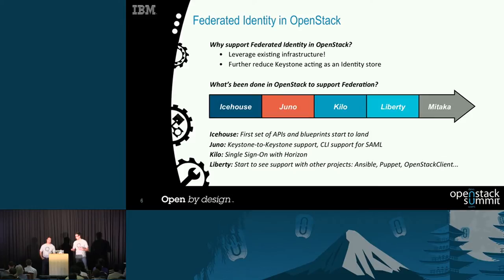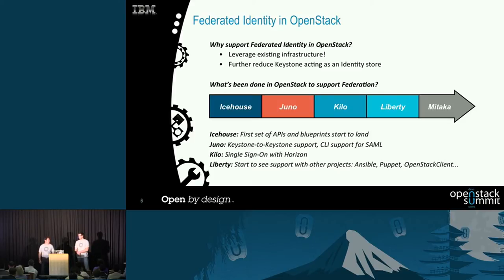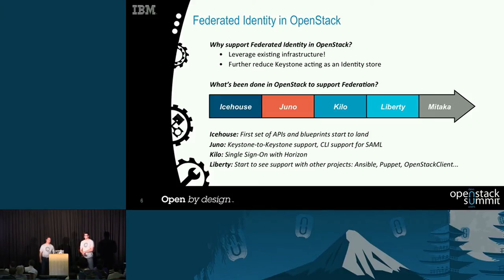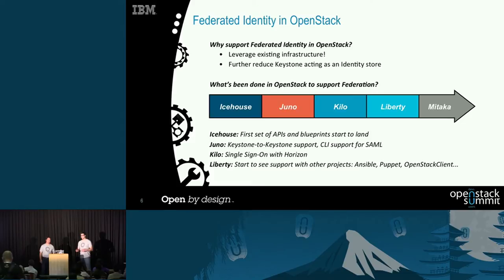We started this in the Icehouse release, where we introduced an initial set of APIs to create identity providers, create protocols, and authenticate against Keystone. In Juno, we advanced this to include Keystone-to-Keystone support, where you could exchange identities between different Keystone deployments, and we added CLI support. In Kilo, we worked with the Horizon team to include single sign-on support. In Liberty, we started to see other projects embrace this — Ansible, Puppet, Chef, and even the OpenStack client command-line project.